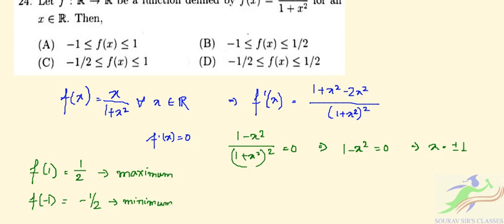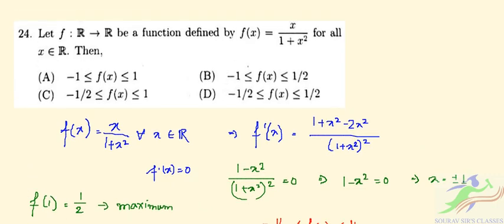So 1/2 is the maximum and -1/2 is the minimum. So f(x) will be between -1/2 ≤ f(x) ≤ 1/2. So the correct option varies minus half. So D is the correct option.